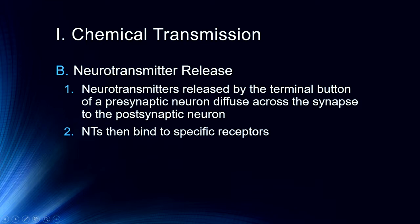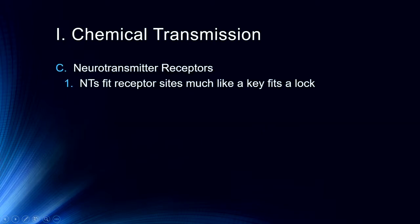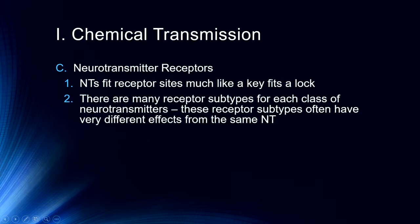Those neurotransmitters then travel across the synapse and bind to specific receptors and receptor subtypes. For example, there are numerous serotonin receptor subtypes and numerous dopamine receptor subtypes. While they respond to their respective neurotransmitter, each receptor type responds in a very specific way — neurotransmitters fit receptor sites pretty much like a key fits a lock, and the many receptor subtypes for each class can have very different effects.